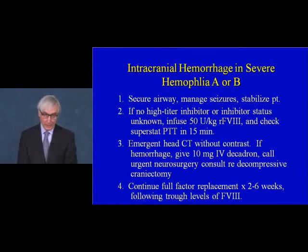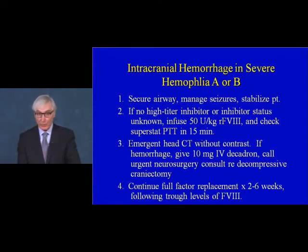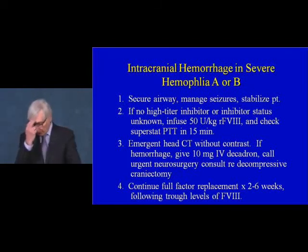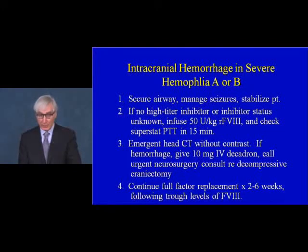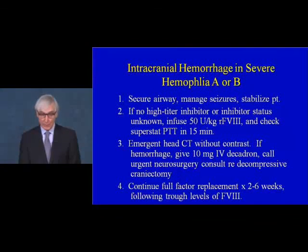In severe hemophilia A or B, it is important to secure the airway, manage seizures, and stabilize the patient. If there is no high titer inhibitor against factor 8, one infuses sufficient factor 8 to raise the level to 100%, then checks a stat PTT to confirm correction of the clotting system. A factor 8 level is hard to obtain on short notice, so PTT is used for real-time decision making. Emergency head CT or susceptibility-weighted MR is obtained. If there is hemorrhage, give dexamethasone, call neurosurgery to consider decompressive craniectomy, and continue full replacement therapy for weeks following trough levels of factor 8 to ensure at least 40% in trough measurements.